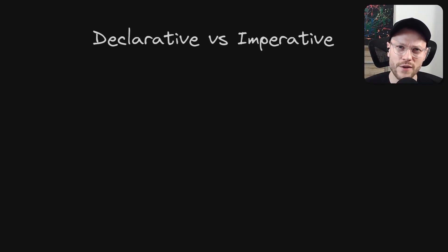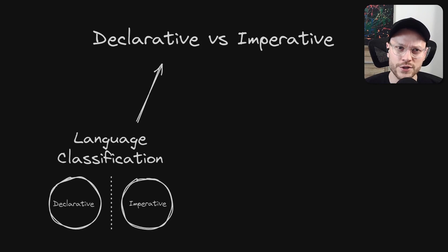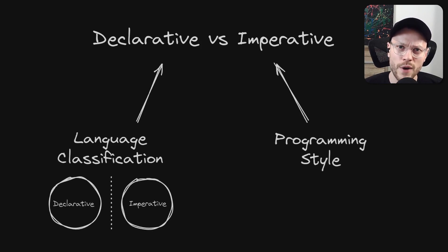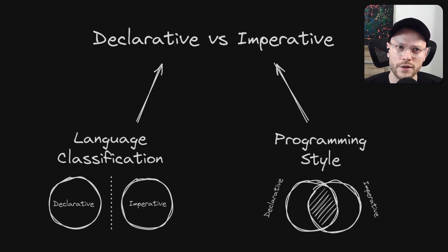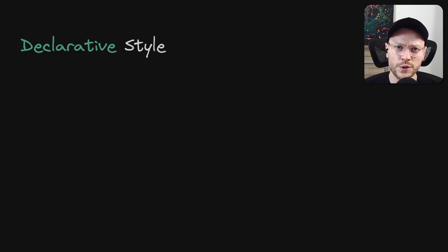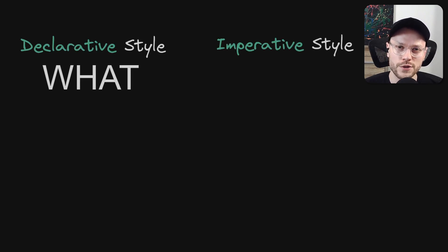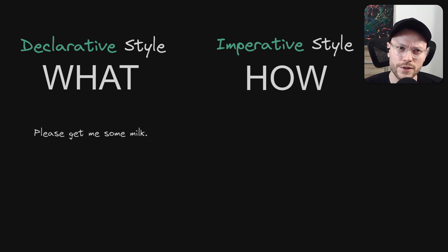So it probably makes sense to have very precise definitions for language classification, but in the context of programming styles, the boundary between the two becomes blurry. To prove it, I'll show you two examples — one in natural language and one in code. The most popular definition of declarative is that it describes what, and imperative describes how. So I can declaratively say what I want: please get me some milk.